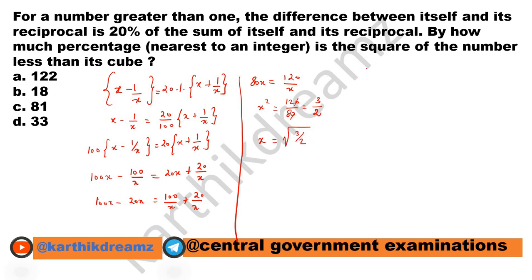They are asking by how much percentage is the square of the number less than its cube. So the square of the number, x square, equals 3 by 2 which is nothing but 1.5. And x cube equals root of 3 by 2 power 3 which is nothing but 3 by 2 root 3 by 2, which equals 1.83.